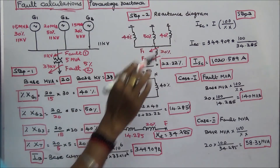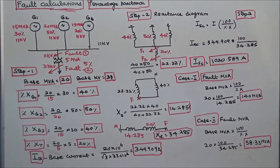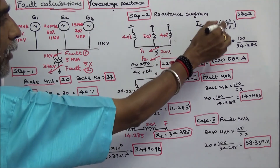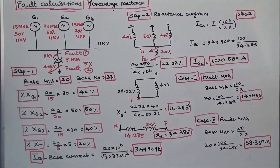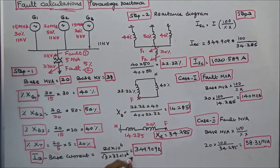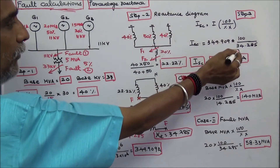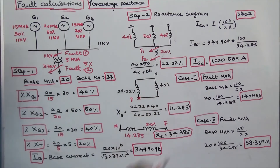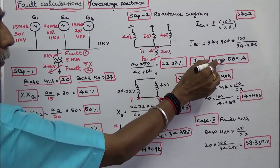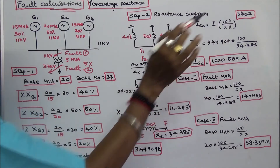The third step is to calculate the short circuit current. Short circuit current ISC is equal to rated current I × 100 divided by percentage X. Therefore, ISC = 349.909 × 100 / 34.285, which gives a short circuit current of 1020.589 amps.